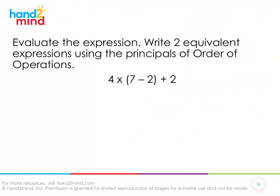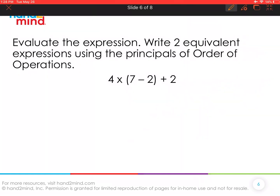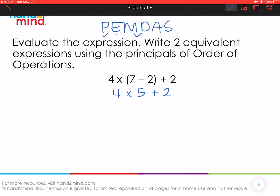The next one says to evaluate the expression and write two equivalent expressions using the principles of order of operations. Evaluate just means to solve. We need to follow PEMDAS — please excuse my dear aunt Sally — and look for parentheses first. Inside our parentheses we have seven minus two. What is seven minus two? Five — nice work. After parentheses we look for exponents — none here — then multiplication or division. Four times five is twenty, and then we need to add two. Twenty plus two is equal to twenty-two.